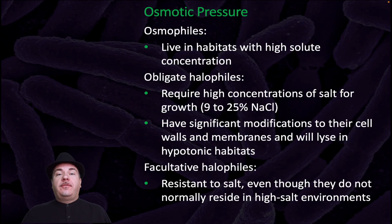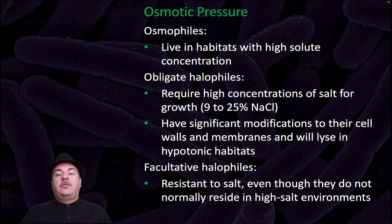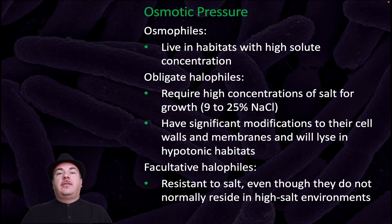Osmotic pressure also affects living organisms. Osmophiles live in habitats with high solute concentration. Obligate halophiles require high concentrations of salt for growth — between 9 and 25% sodium chloride — and have significant modifications to their cell walls and membranes, lysing in hypotonic environments. Facultative halophiles are resistant to salt even though they do not normally reside in high-solute environments.